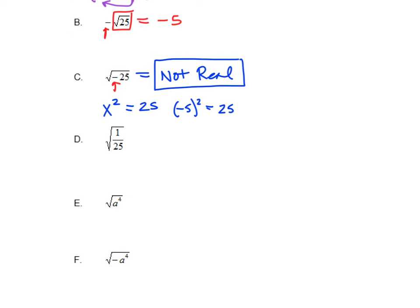Letter D: we have the square root of 1 over 25. We have a property in math that tells us if you're taking the square root of a fraction, you can break it down and take the square root of the top number and the square root of the bottom number separately. So the square root of 1 is 1, the square root of 25 is 5, and our answer is 1 over 5.